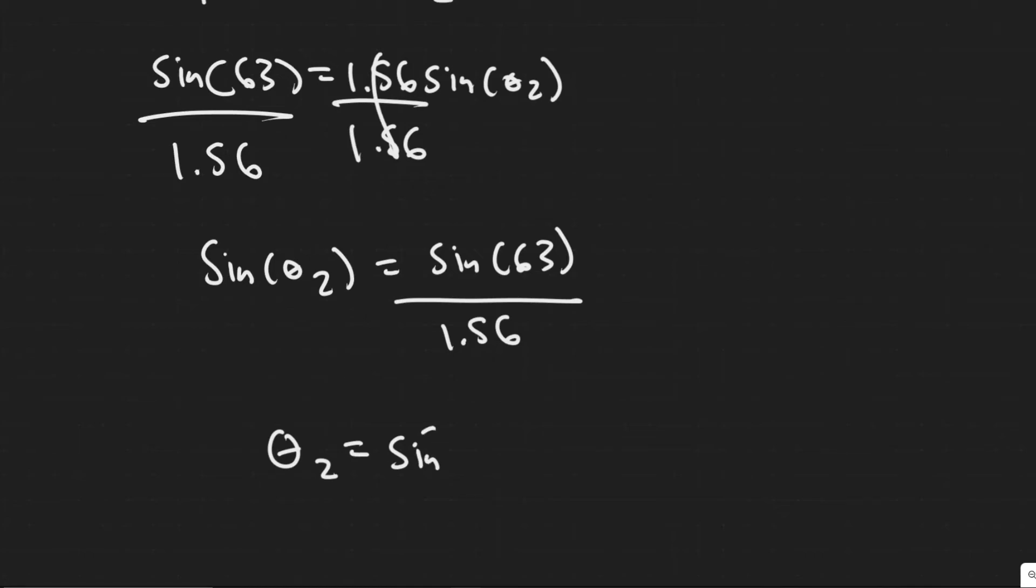So to do that, you just take the arc sine. The arc sine on this side, it would just cancel it. So we have the arc sine of the sine of 63 divided by 1.56, and then you take the arc sine of that. So let's go ahead and see what that is.